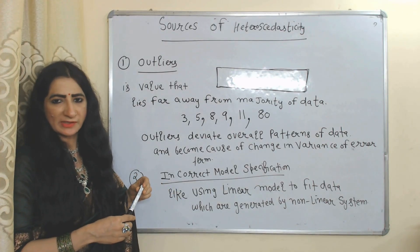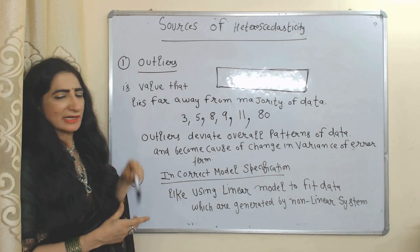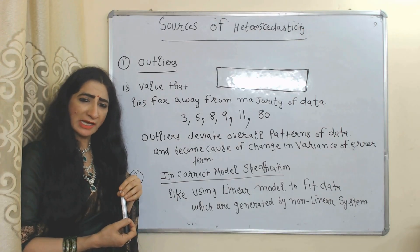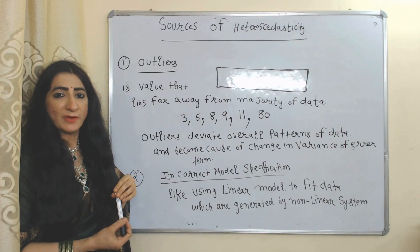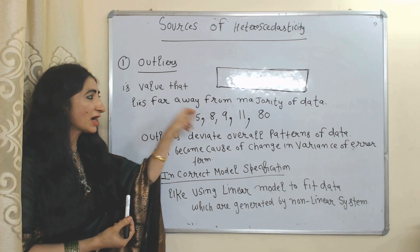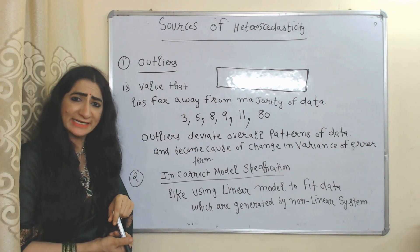Now we will look at the sources of heteroskedasticity. The first source is outliers. Outliers are values that lie far away from the majority of the data.